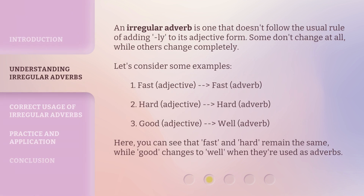An irregular adverb is one that doesn't follow the usual rule of adding "-ly" to its adjective form. Some don't change at all, while others change completely. Let's consider some examples.